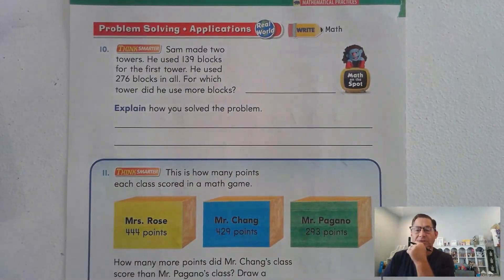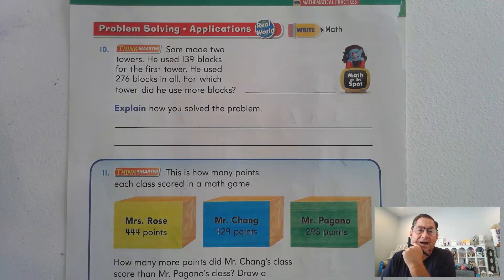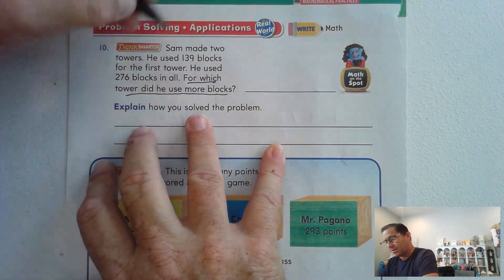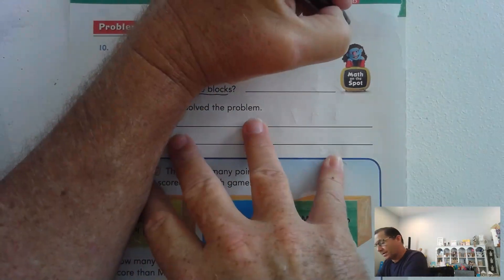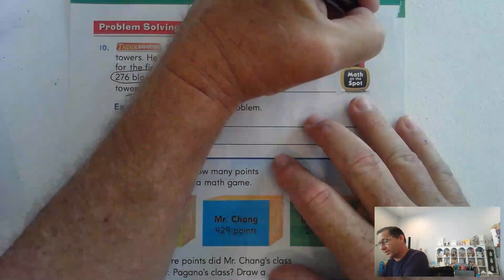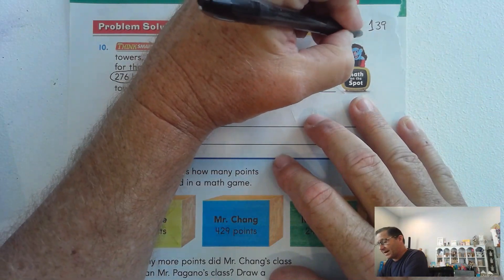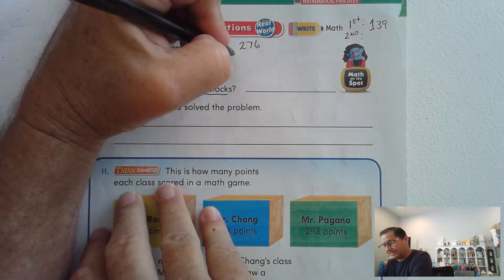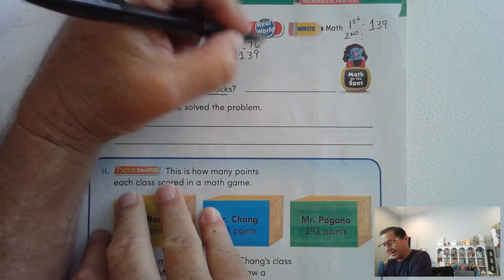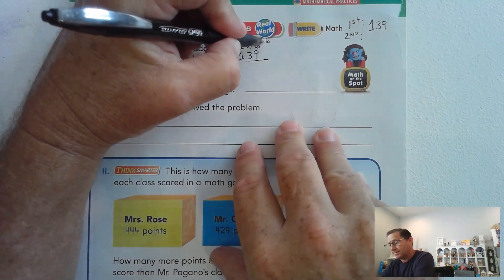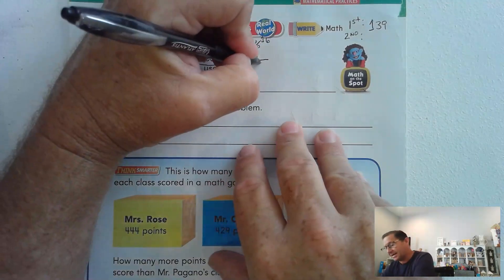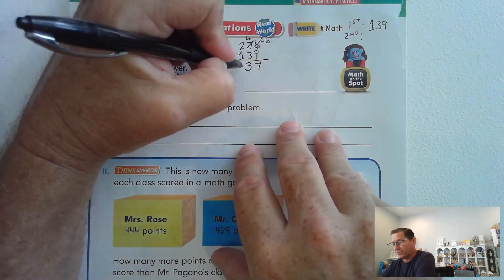Finally, page 316, number 10. Sam made two towers — he used 139 blocks for the first tower and 276 blocks in all. For which tower did he use more blocks? We know the first tower used 139. To find the second tower, subtract: 276 minus 139. We can't take 9 ones from 6, so regroup one ten for 10 ones — 16 minus 9 is 7. 6 tens minus 3 tens is 3. 200 minus 100 is 100. So the second tower used 137 blocks.